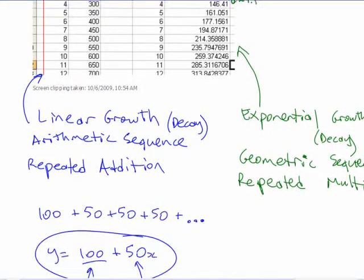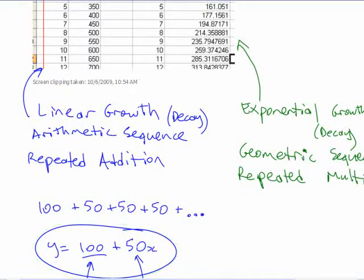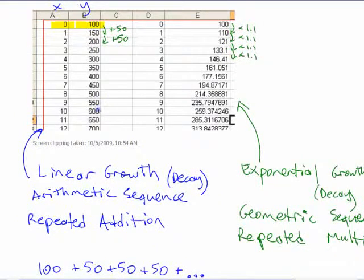when you say 100 plus 50 times x, what you're saying is, if I want this one, I don't want to go through and count how many times. I'm just going to say, to get to there, start with 100 and do 50 times 10, whatever x is, right?